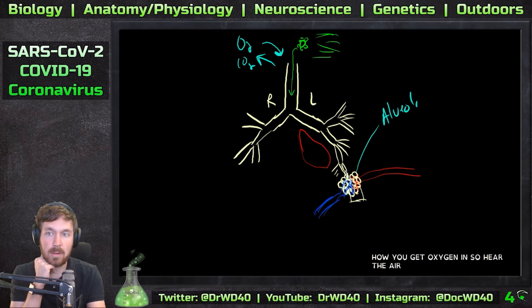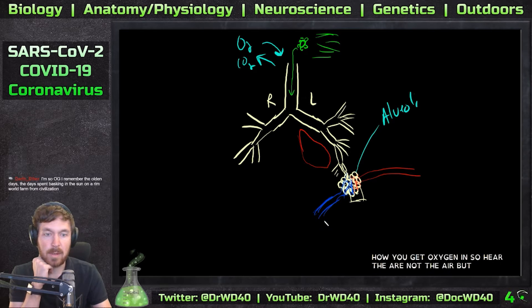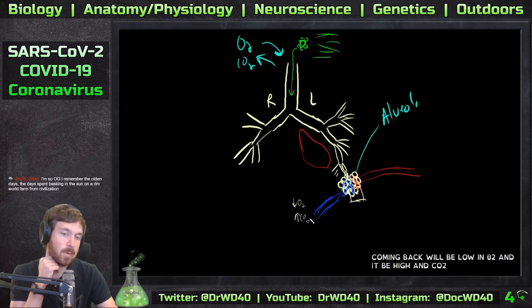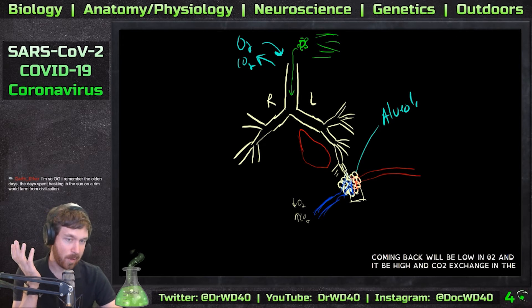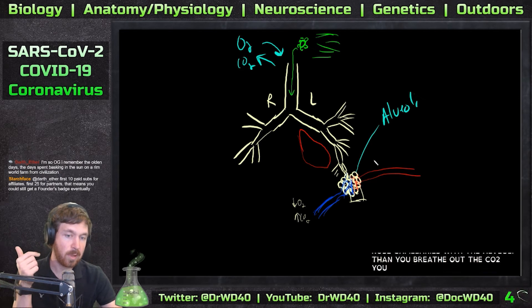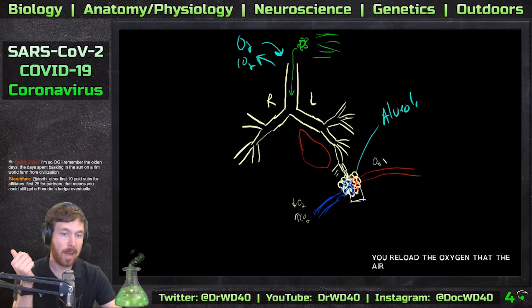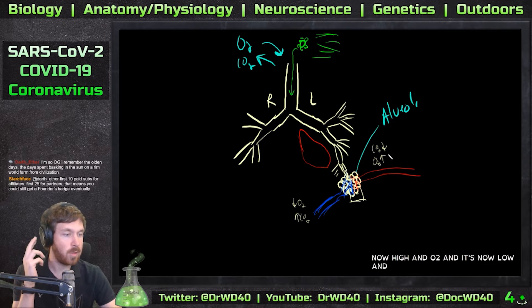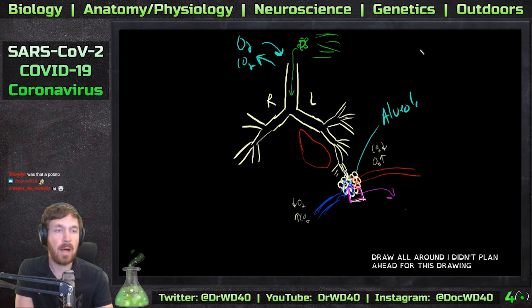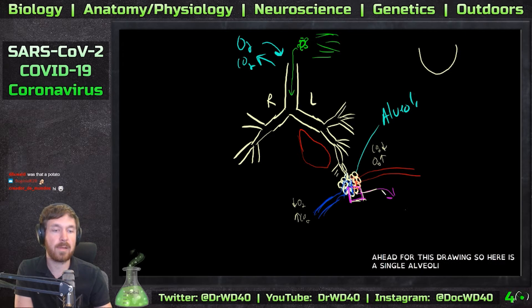The gas coming back will be low in O2 and high in CO2. Then it exchanges in those capillaries with the alveoli, then you breathe out the CO2 and reload the oxygen. The blood going back to your tissues is now high in O2 and low in CO2. So now we want to zoom in to this region - here is a single alveolus.